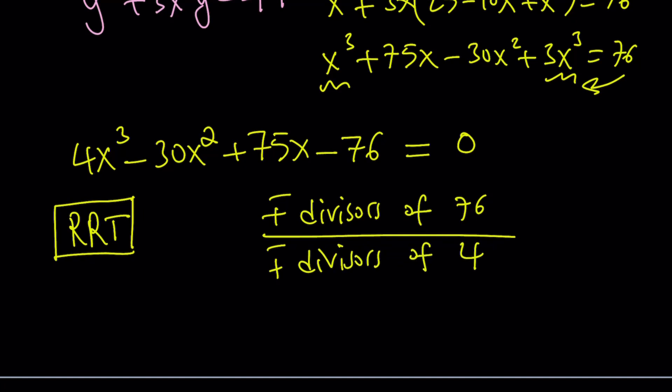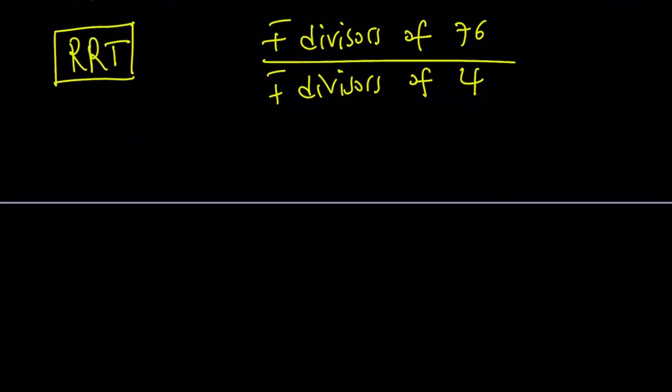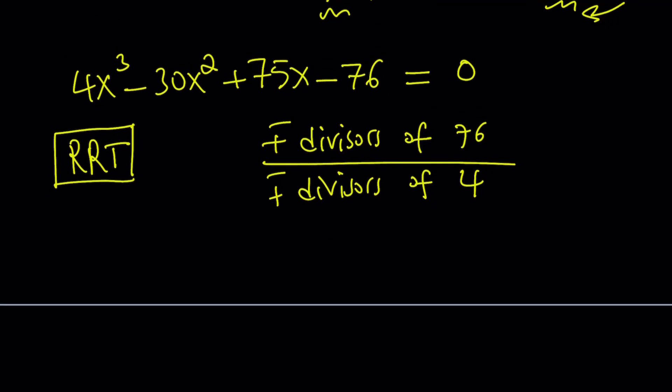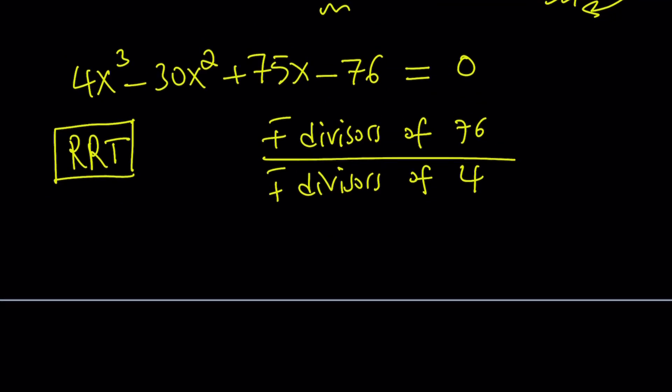So we're basically going to be considering all the divisors of 76 and all the divisors of 4 plus and minus. And then by dividing all of those in different combinations, everything by everything pretty much, we're going to get lots of candidates. And one of them hopefully will work. And in this case, to save you all the trouble, because that's going to be super time consuming, fast forward and I'll tell you what it is. x equals 4 works.